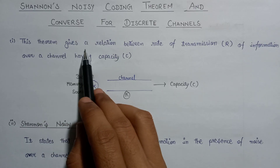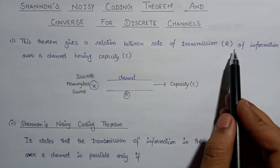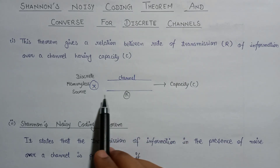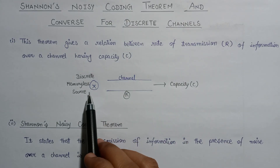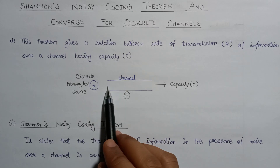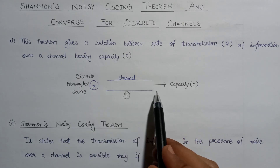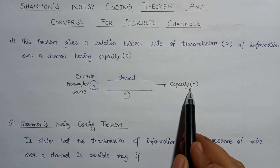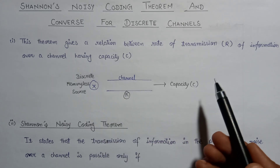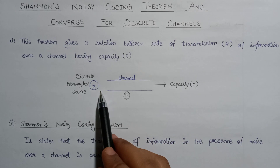Shannon's Noisy Coding Theorem gives us a relation between the rate of transmission of information over a channel, denoted by capital R, and the capacity of the channel, denoted by C. Assume there is a discrete memoryless source that emits symbol X over a channel. The rate of transmission is denoted by R, the channel capacity is denoted by C, and the theorem shows the relationship between these two quantities.